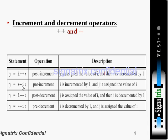Then the second one is pre-increment. Here what will happen? i is incremented by 1 first, then only it will assign that value of i.